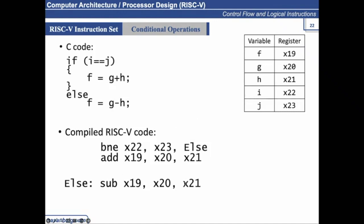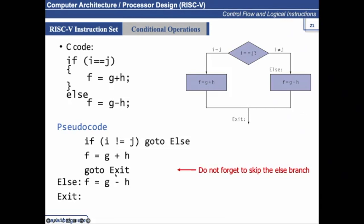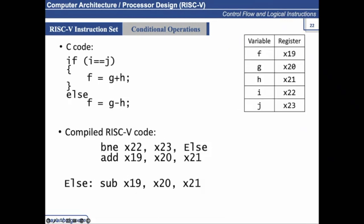I have mentioned 'go to exit' in pseudo code form, but there is no instruction called go to in assembly — there is one in C, but not in assembly. So how do we jump to exit if exit is written further down?